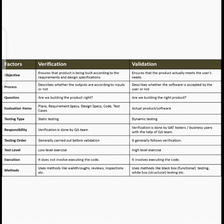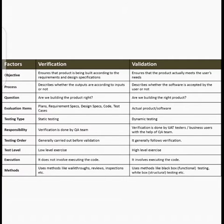As an example for verification and validation: a customer goes to a pizza shop and demands chicken pizza that is good and less spicy. When the pizza arrives and matches the order taken — that is verification. But if the shop makes a pizza that does not meet the customer's specific requirements — for example wrong flavor — then it is not valid. Verification checks that the product is made per the order specification; validation checks that the product meets the user's actual requirements.